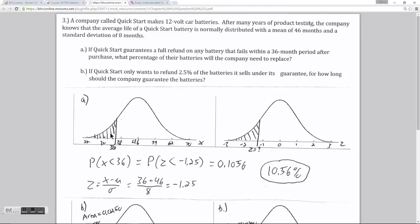So those batteries would be represented in this shaded region right here, to the left of x equals 36. So essentially this problem breaks down into finding the probability that a battery is going to last less than 36 months.